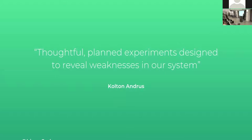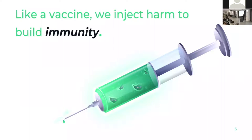Here's a definition of chaos engineering — it comes from my CEO, so what the boss says goes. Chaos engineering is about thoughtful planned experiments designed to reveal weaknesses in our system. If I go back home to Sydney, Australia and talk to my mum about what I'm doing in San Francisco, I describe it as kind of like vaccination — you inject some kind of harm into your system to build a more robust system overall.